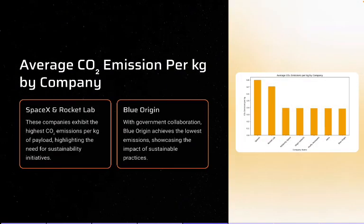Next, average CO2 emissions per kg by company. The bar chart shows average carbon emissions per kilogram of payload for different companies. Like SpaceX, Rocket Lab had the highest emissions. This is because they operated without government collaboration. In contrast, the blue region with government partnership has achieved the lowest emissions.